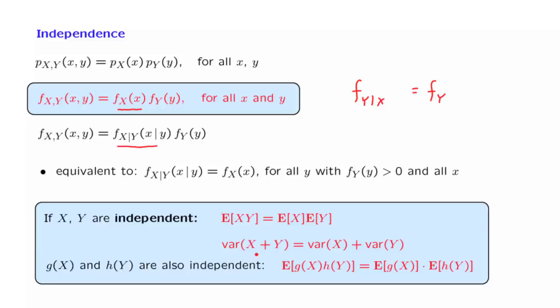The variance of the sum of independent random variables is the sum of the variances. And functions of independent random variables are also independent, which in particular implies, using the previous rule, that the expected value of a product of this kind is going to be the product of these expectations.